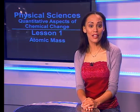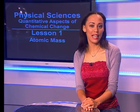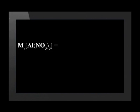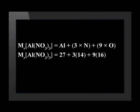Let's calculate the relative formula mass of aluminium nitrate. We write down the symbol for relative formula mass and then the correct formula for one formula unit of aluminium nitrate. In this formula unit, there are one aluminium, three nitrogen, and nine oxygen atoms. We find the relative atomic masses of the different elements on the periodic table and substitute these into the formula, finding that the relative formula mass is 213.